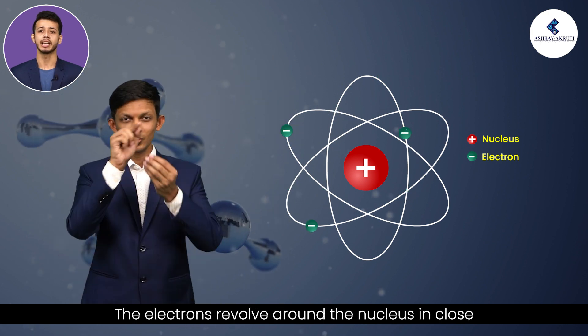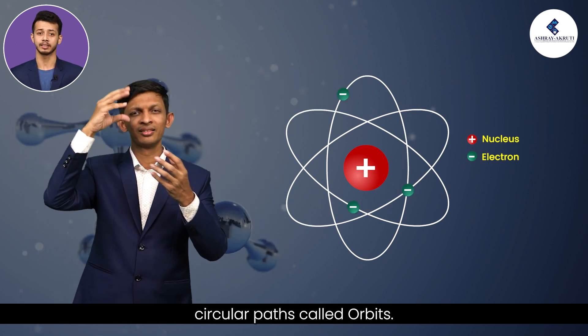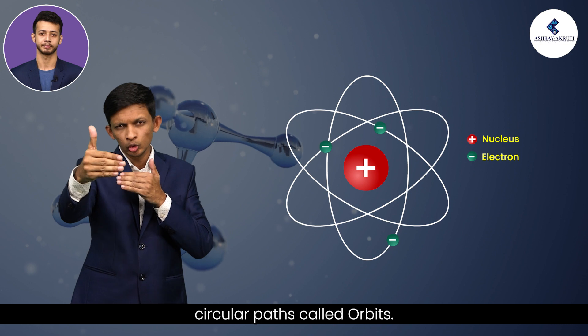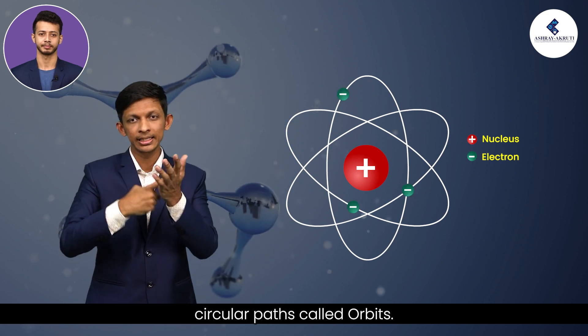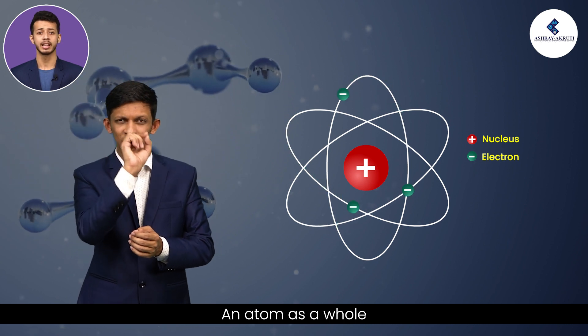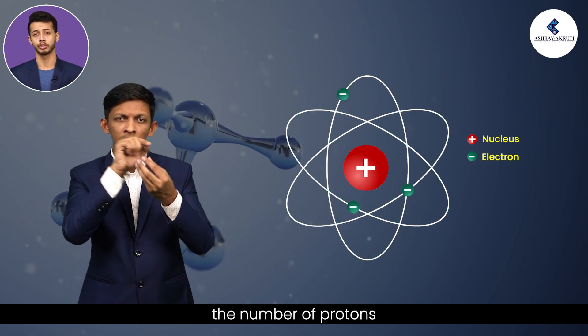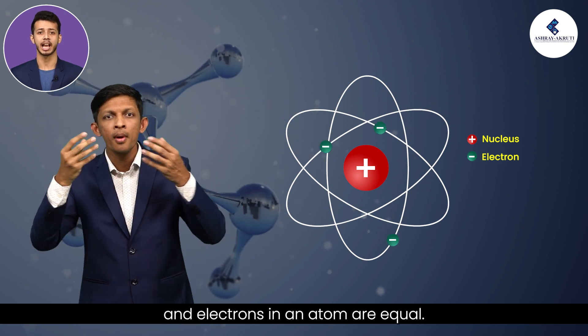The electrons revolve around the nucleus in close circular paths called orbits. An atom as a whole is electrically neutral, that is, the number of protons and electrons in an atom are equal.